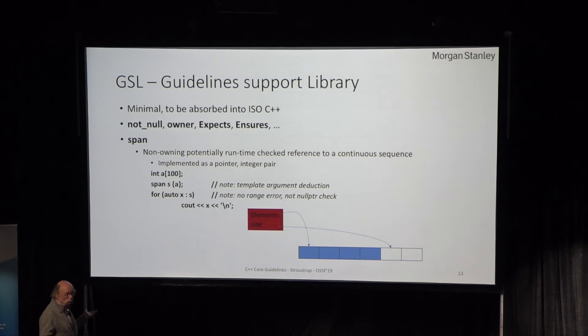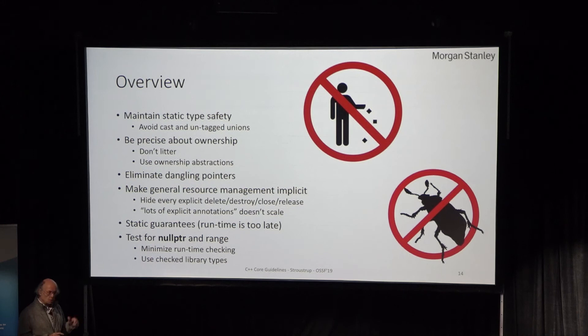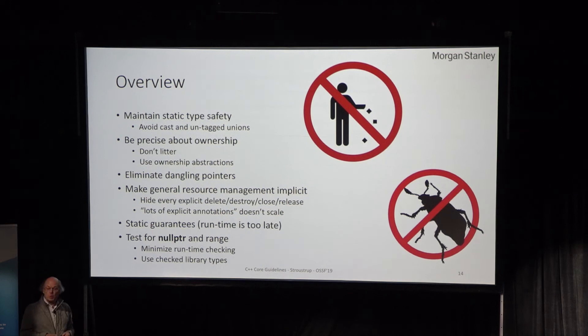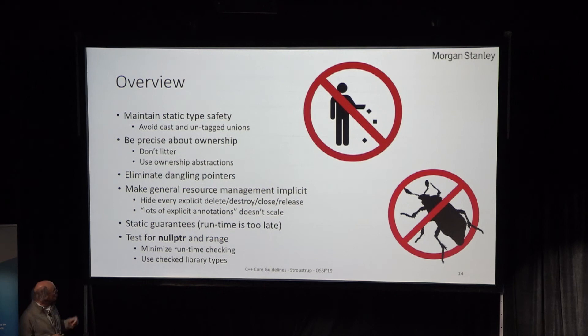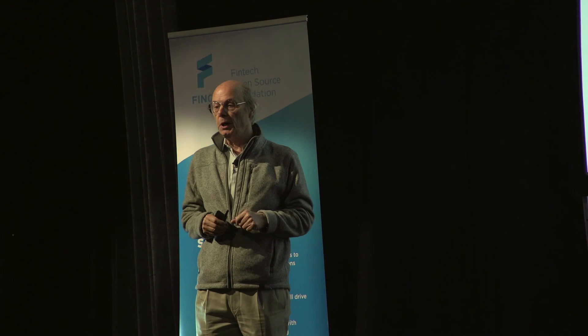To summarize: we want to maintain static type safety — looking at casts and untagged unions, making sure you don't use them. In the standard we now have variants, so we can do without untagged unions. Don't litter, don't leak memory — we know how to do that using ownership abstractions. A vector takes care of its elements; a thread takes care of its operating system support. We eliminate dangling pointers, make resource management implicit, and provide static guarantees. There are also some libraries for things that can't be guaranteed statically. I encourage you to look at it, try it if you can, and give feedback — it's on GitHub. Otherwise, send email to one of the editors. Thank you.